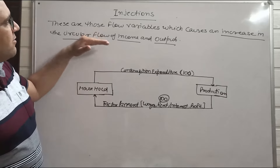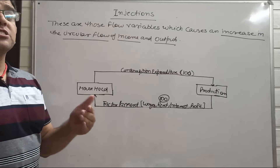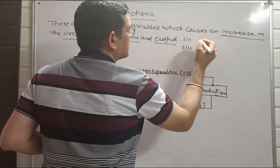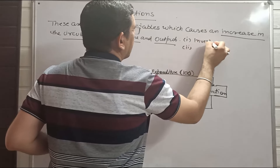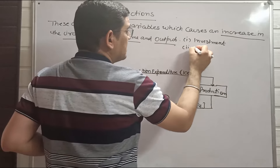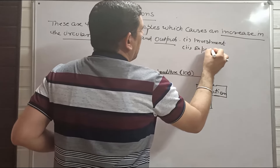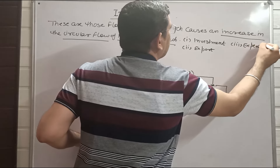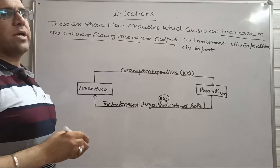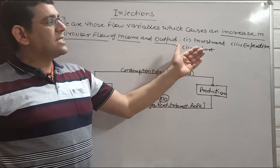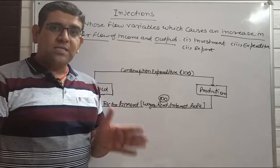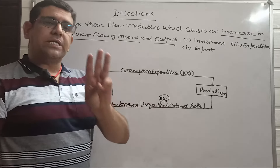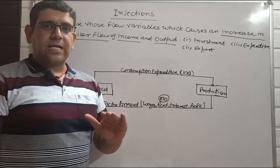Now the effect of injections occurs. There are many variables in injections, but for simplicity we take three: investment, export, and expenditure. These are three factors — these are injections. I am not saying these are the only three injections; there are many more. But for the sake of simplicity, we are taking these three types of flow variables which act as injections.